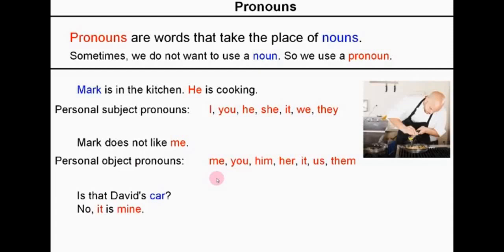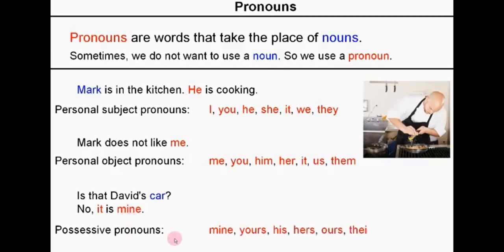Is that David's car? No, it is mine. In this sentence we have two pronouns. We have 'it', which is a pronoun referring to the car — it's replacing the car. And 'mine' is also referring to the car and it expresses possession, telling us who the car belongs to. We call it a possessive pronoun. The possessive pronouns are mine, yours, his, hers, ours and theirs. So these are some examples of pronouns, but of course there are many others.